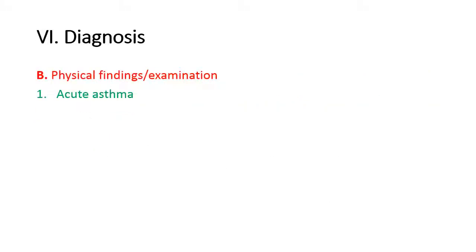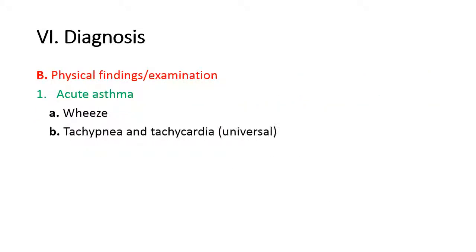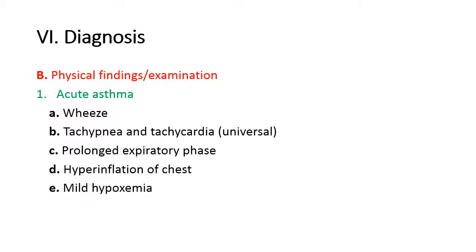B. Physical findings — examination. Acute asthma: A. Wheeze. B. Tachypnea and tachycardia — universal. C. Prolonged expiratory phase. D. Hyperinflation of chest. E. Mild hypoxemia.